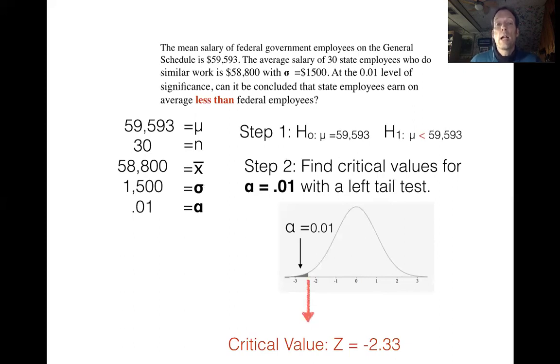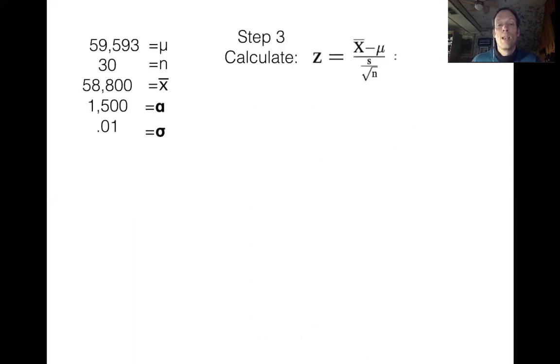For step two, our critical value was negative 2.33. And that means that the critical region is going to start at exactly a distance of 2.33 standard deviations below the population average. So we have to figure out, is x bar more than 2.33 standard deviations away from mu, the population average? That's going to roll us right into step three. So pause the video for a minute or two, calculate out our Z value. Let's see what we get. So we end up with a test value of negative 2.9.